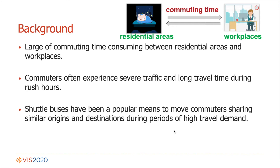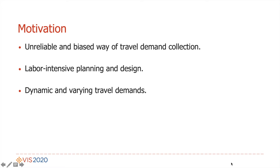Here are the motivations. On unreliable and biased collection of travel demands: shuttle buses providers rely on online spaces to gather travel demands. Labor-intensive planning and design: it takes a long time from the initial data collection to the final deployment of a new route. Dynamic and varying travel demands: it is hard to detect changes in travel demands and adjust the shuttle service accordingly, when only manually processing the records of the online service.